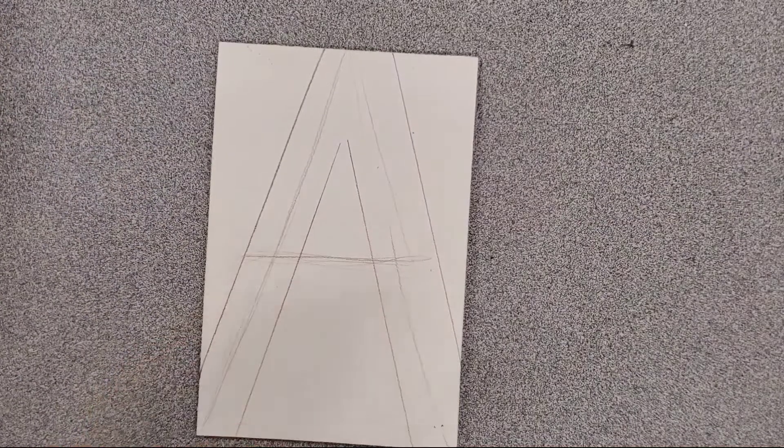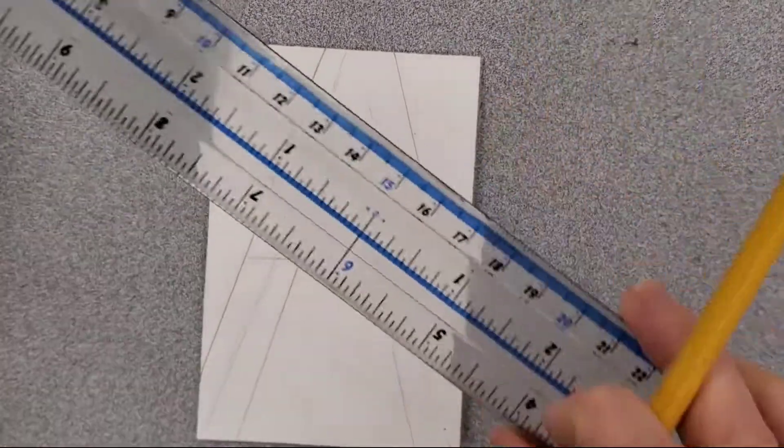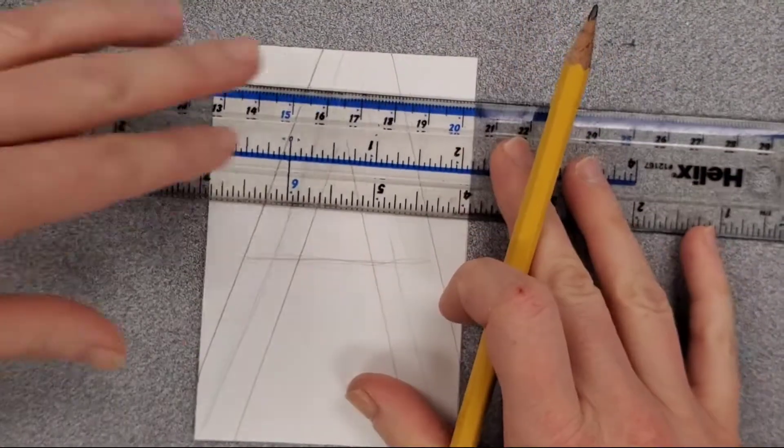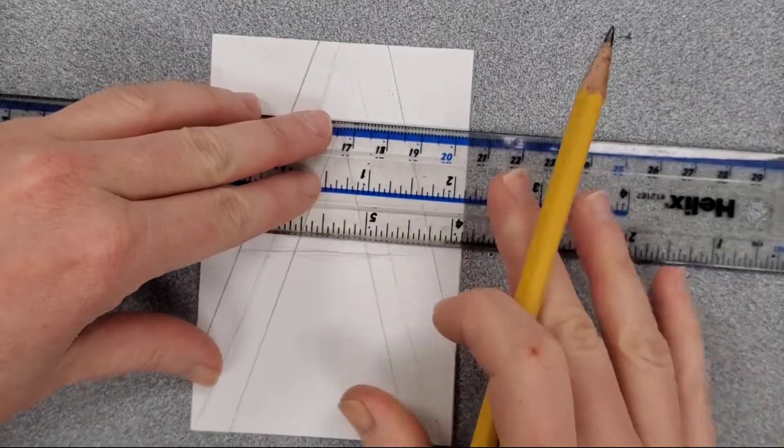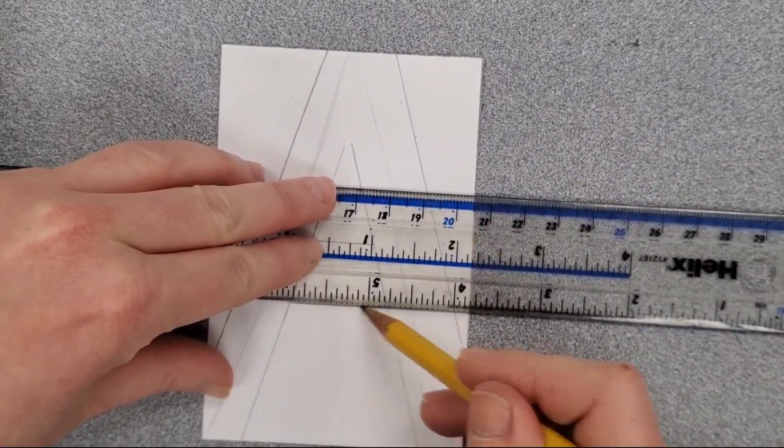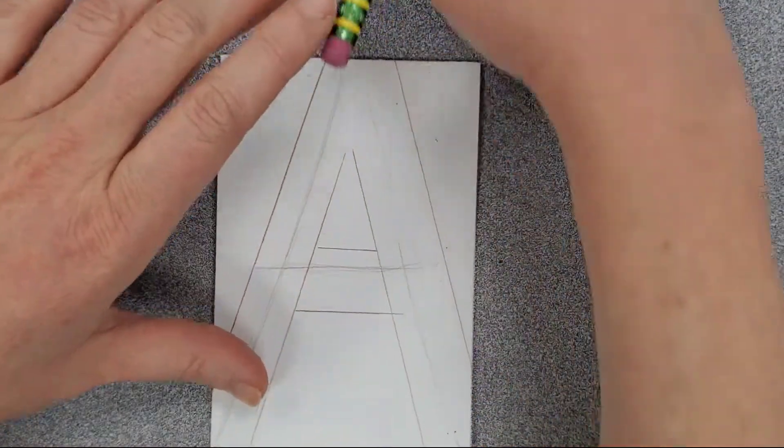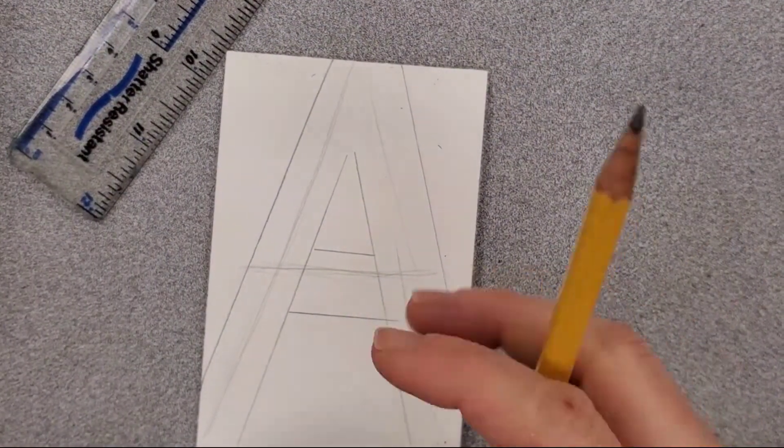Alright, so already I can tell I'm a little bit off on this side, but I'm going to keep going just to see what I end up with. Again, I'm trying to keep this even width on both sides of my skeleton as much as possible. So this is what I have so far.